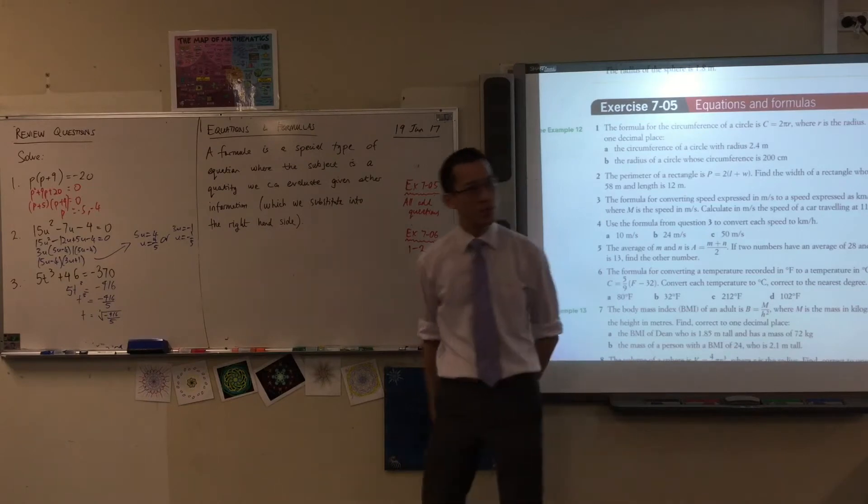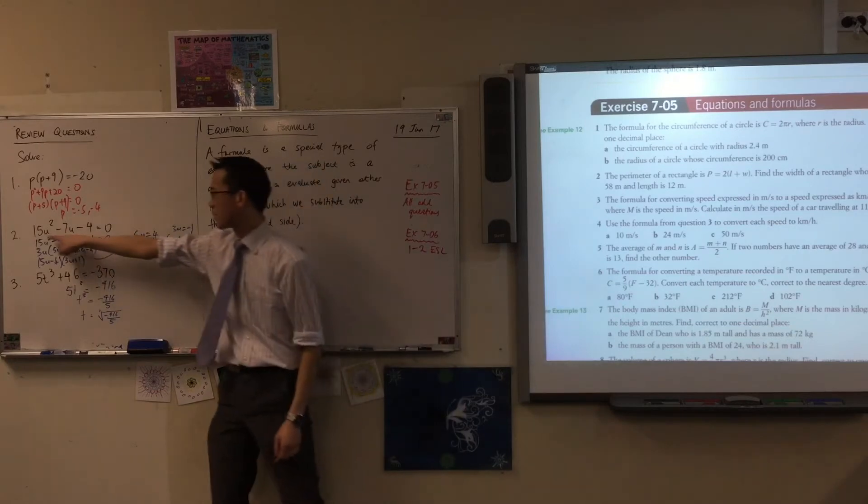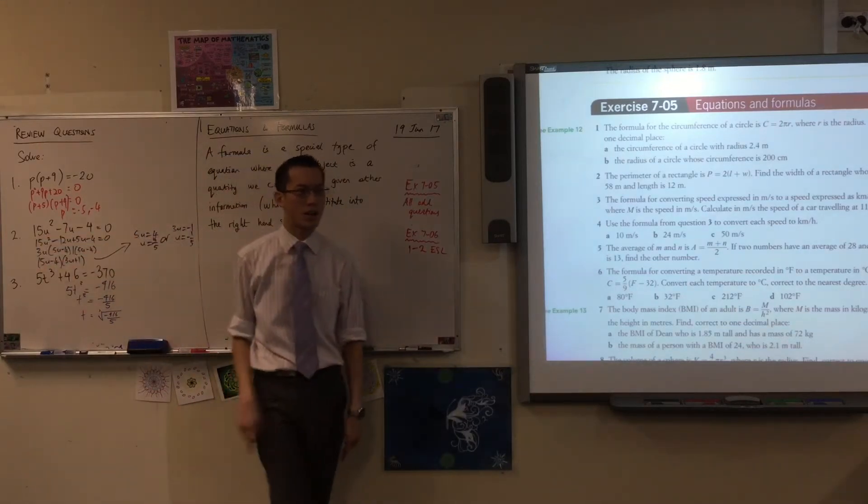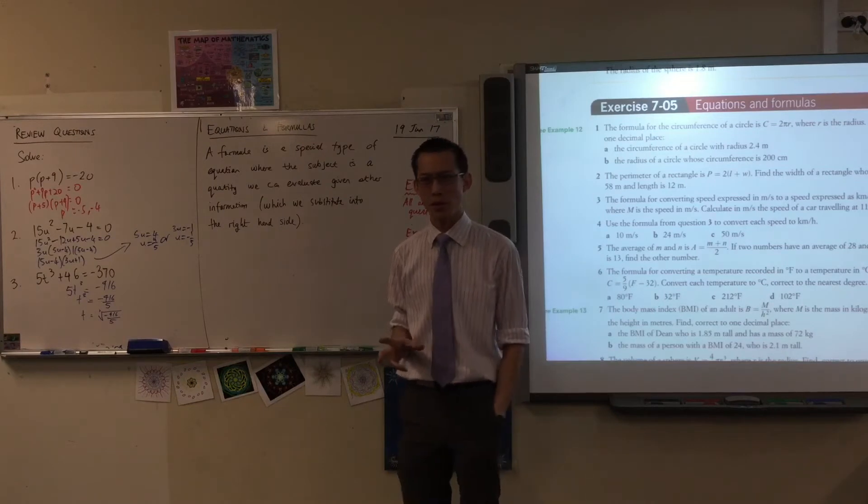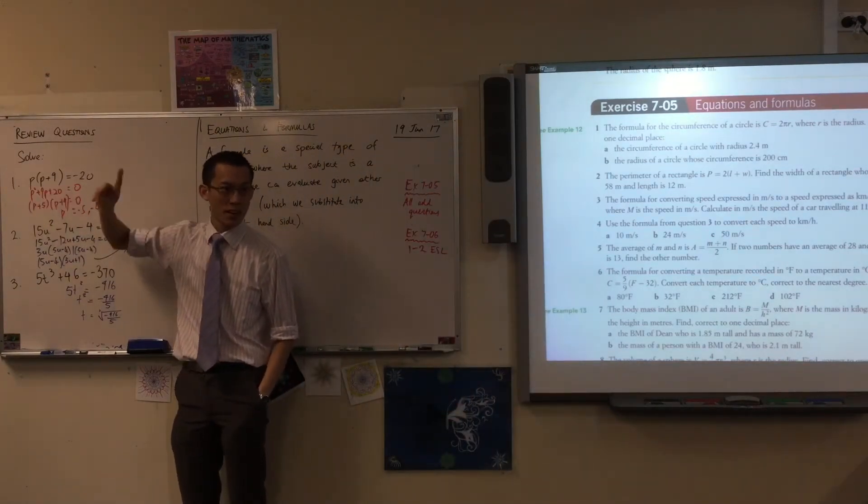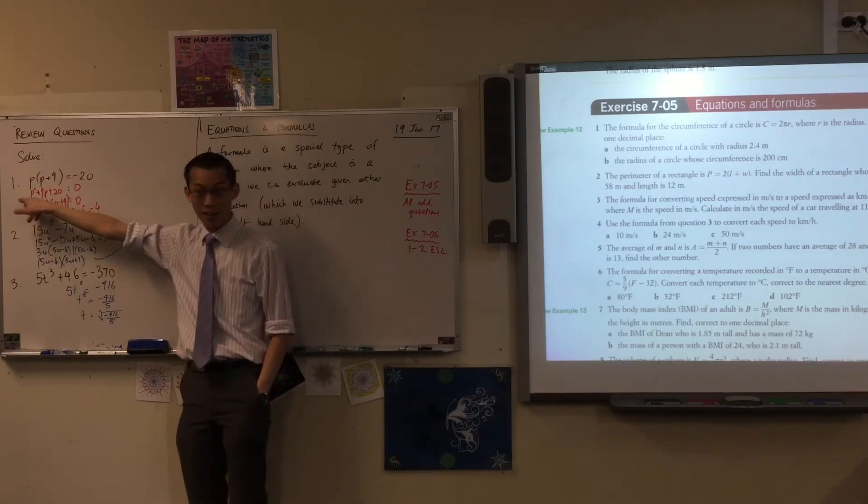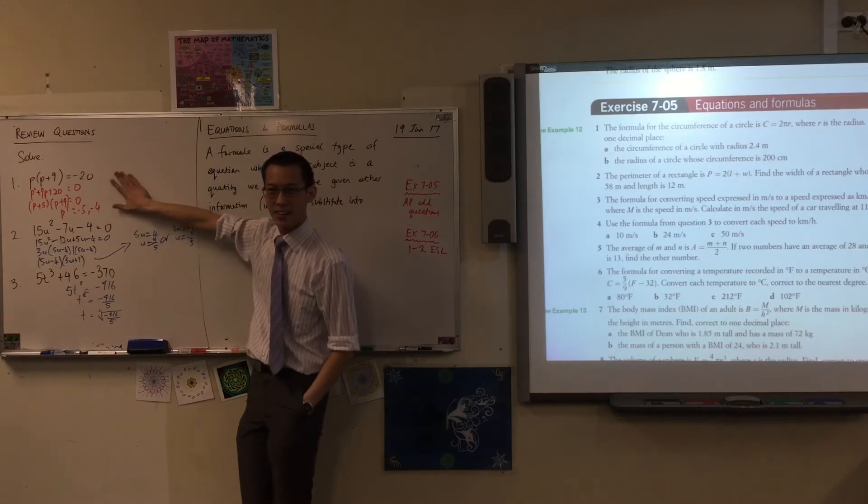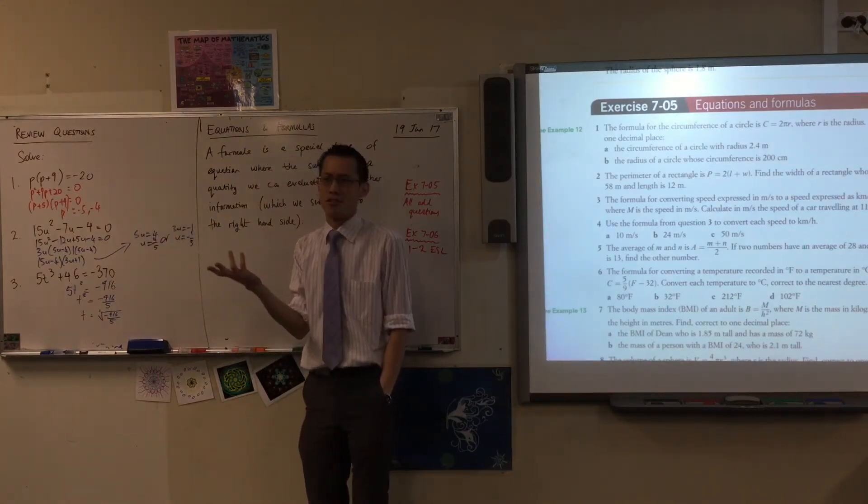When you have a look at number 2, similar kind of problem, but it was more challenging because I gave you something with a number out the front here which was not 1. Does anyone remember what that is called? Do you remember what that name is? So for example over here, the number attached to the P squared is just a 1, so we call this... So the coefficient is 1, so we call this monic. Here, the coefficient is not 1, so we call it non-monic.